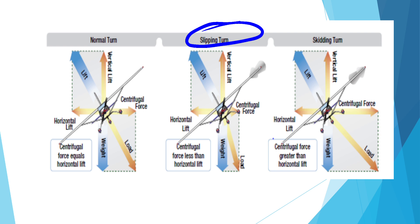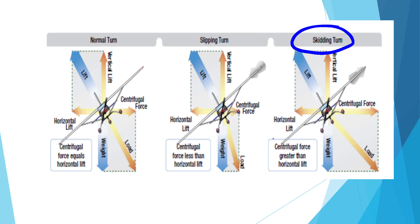Now talking about skidding: if the centrifugal force is greater than the horizontal component of lift, the aircraft enters a skidding condition. To correct slip or skid, you work on the bank angle and angle of attack in opposite ways — if you increase the bank angle, the other decreases. The angle of attack and bank angle work inversely with each other.